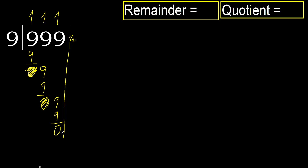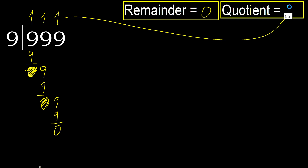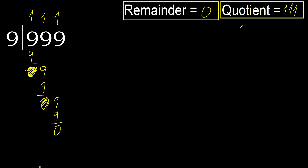There is no next number, therefore finish it. Okay, 0. Therefore 999 divided by 9 is 111.